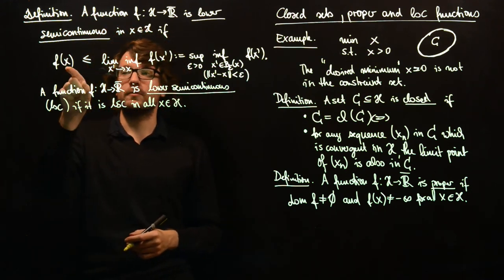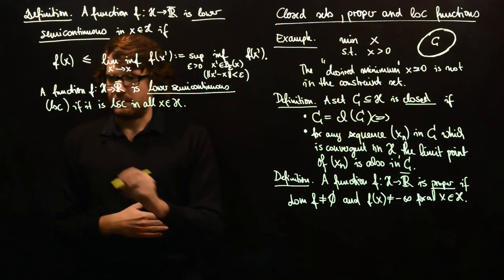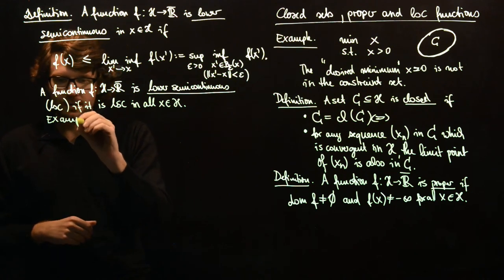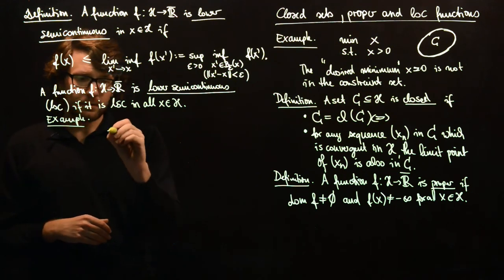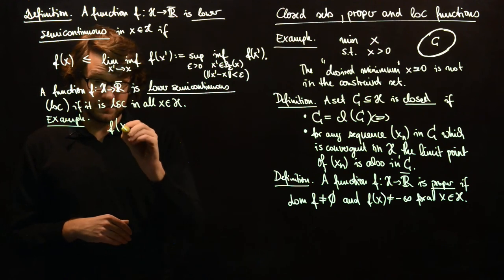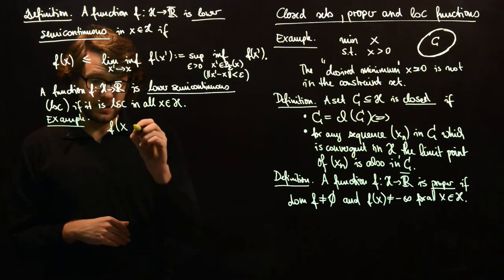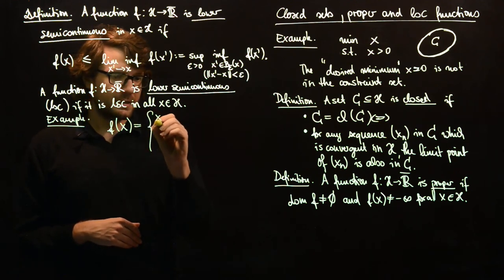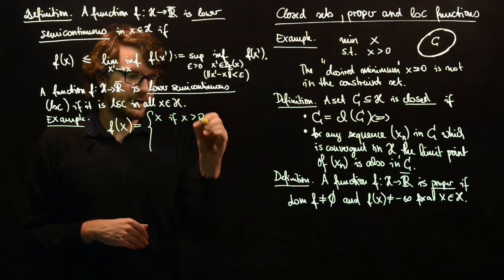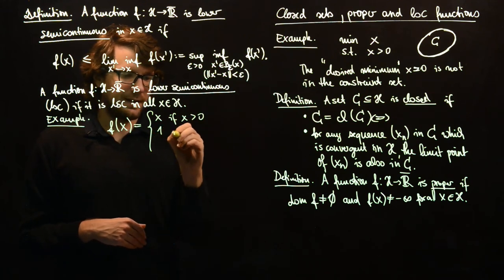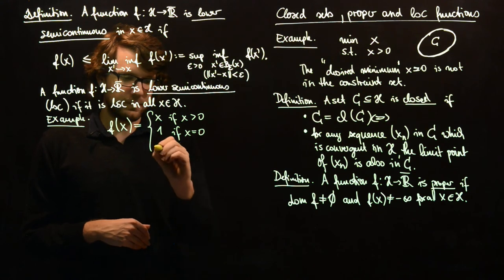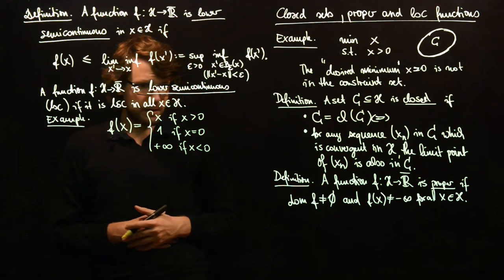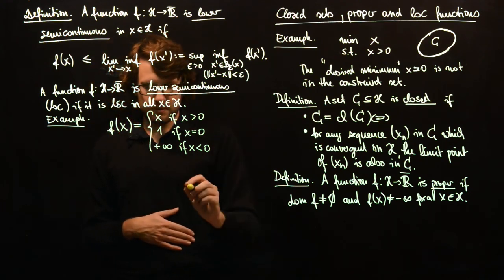We want this property to hold for all x. Let's give an example where this is not satisfied and we will also see how to fix that. So if we define f of x as x if x greater than 0, 1 if x equals 0, and plus infinity if x is less than 0, then the function looks like this.